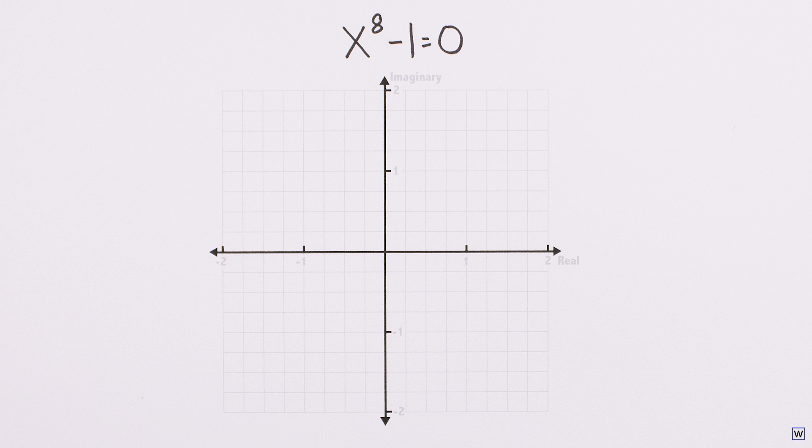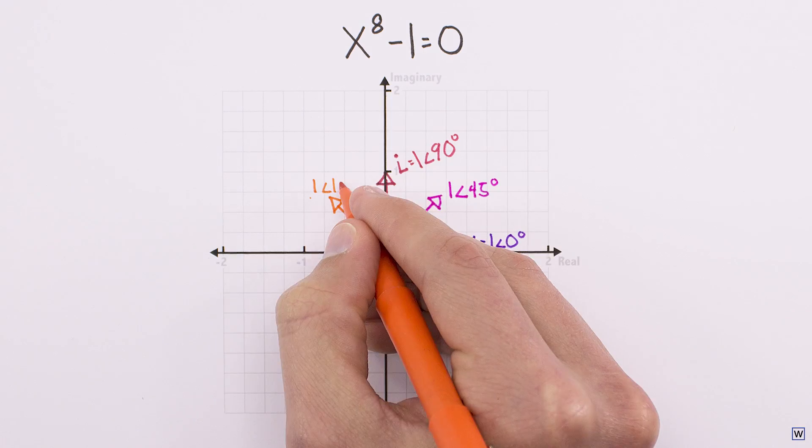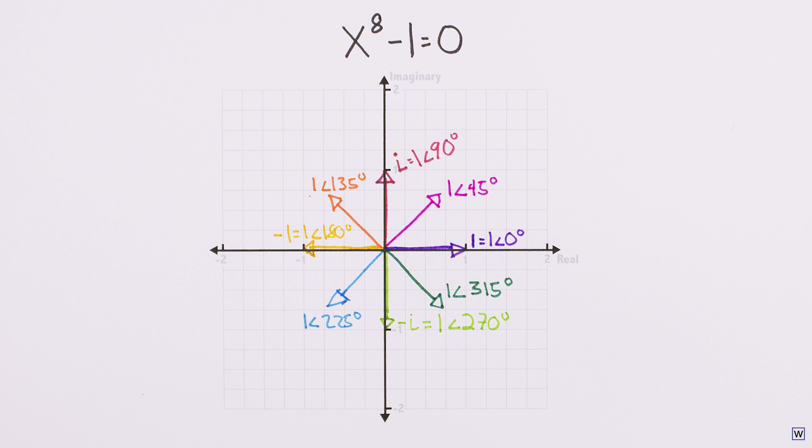So our solutions need to be at 45 degrees, again along the unit circle. All 8 answers, done.